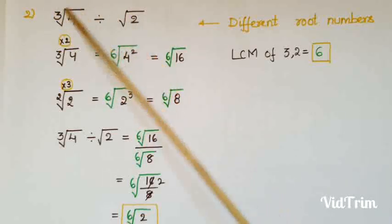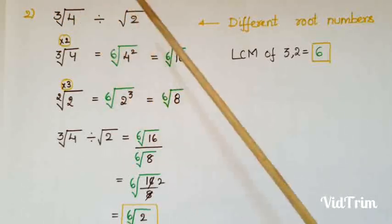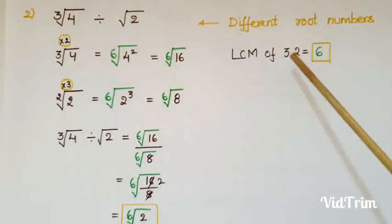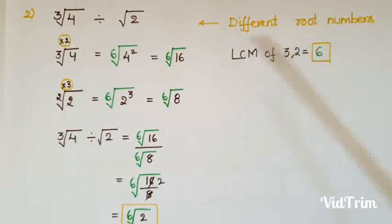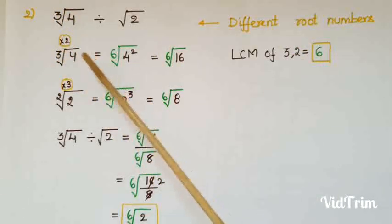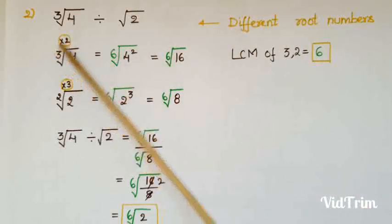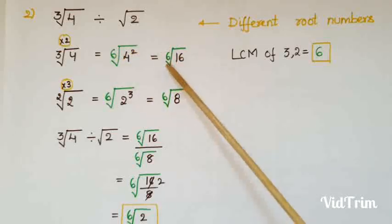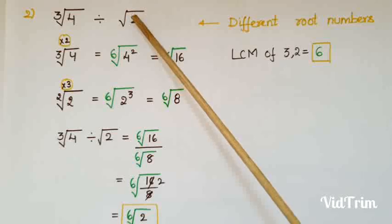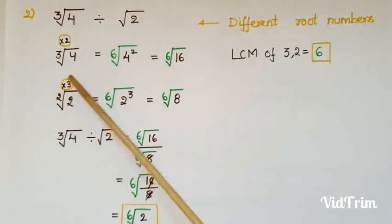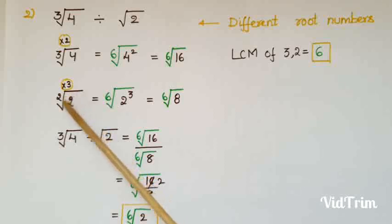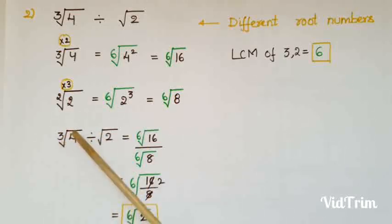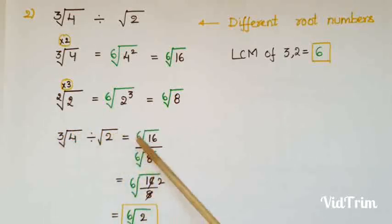The second example is ∛4 ÷ √2. Here the roots are different, so we must convert them to the same root. Take the LCM of 3 and 2, which is 6. Convert ∛4: since LCM is 6, raise 4 to the power 2 to get the 6th root — so ∛4 = ⁶√(4²) = ⁶√16.